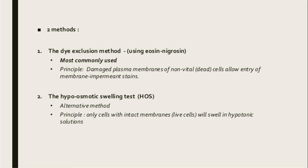There are two methods of vitality testing. The first is the dye exclusion method using eosin-nigrosin, the most commonly used method. Its principle states that the damaged plasma membrane of non-vital (dead) cells allows entry of membrane-impermeable stains — if the cell is dead, the stain enters the cell. The second is the hypo-osmotic swelling test (HOS), an alternative method whose principle states that only cells with intact membranes (live cells) will swell in hypotonic solution.